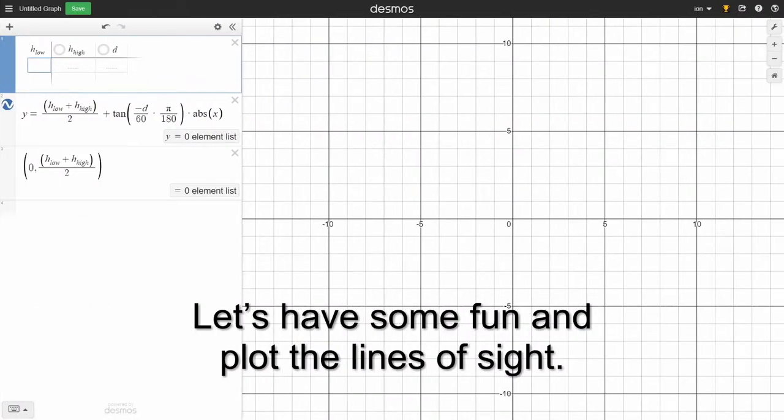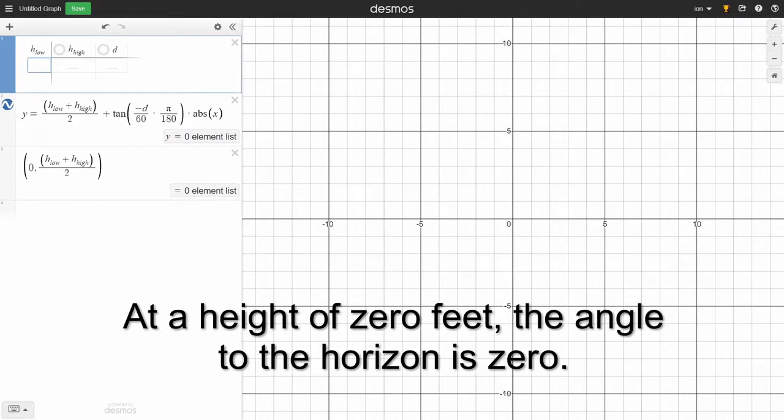Let's have some fun and plot the lines of sight. At a height of zero feet, the angle to the horizon is zero.